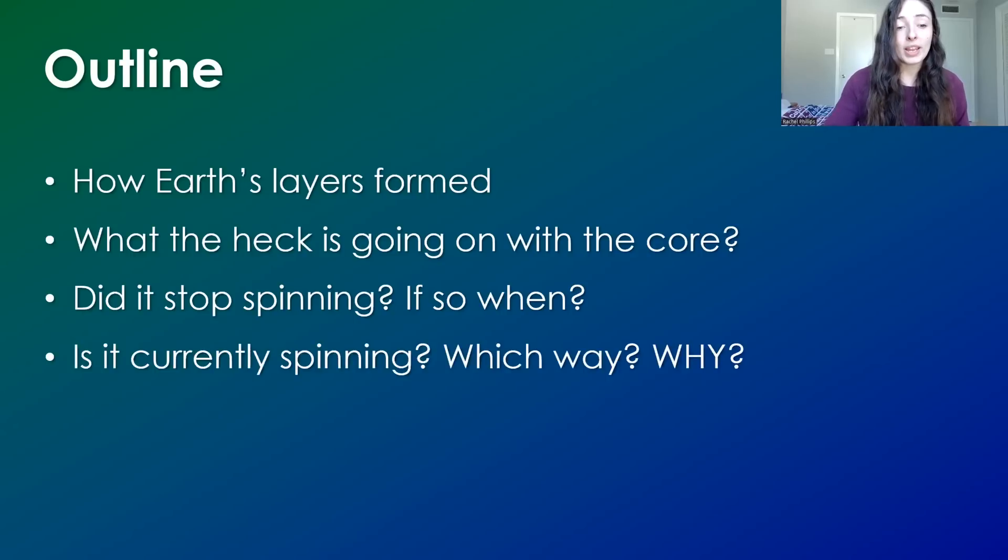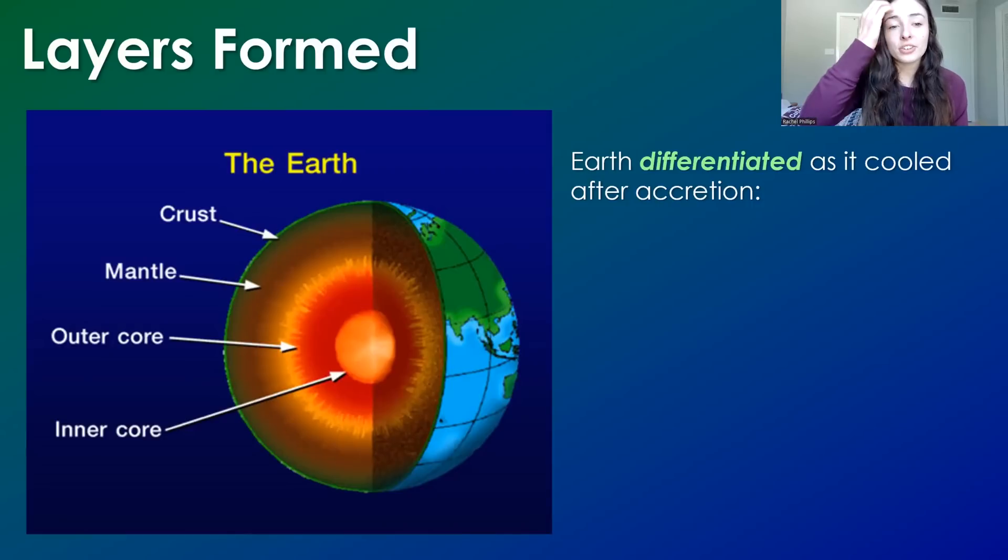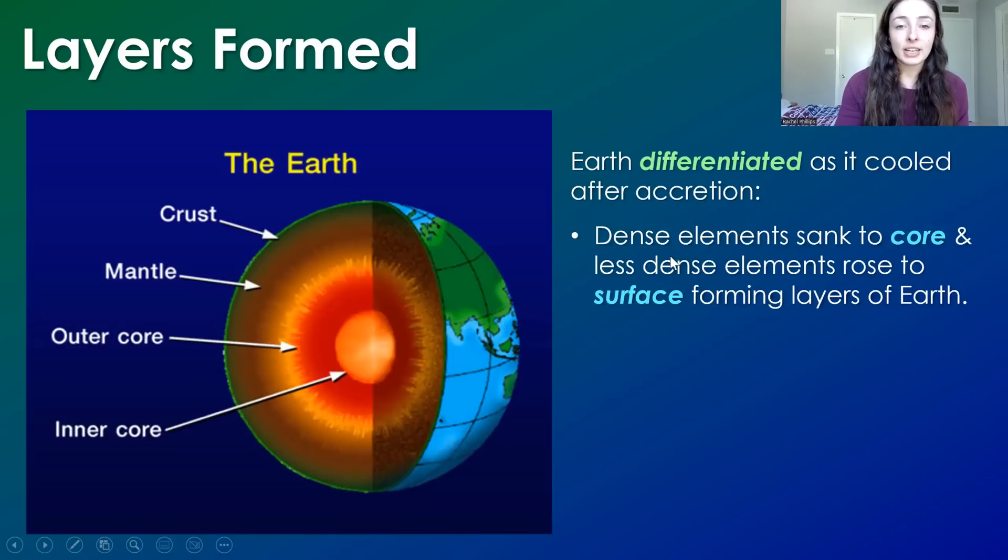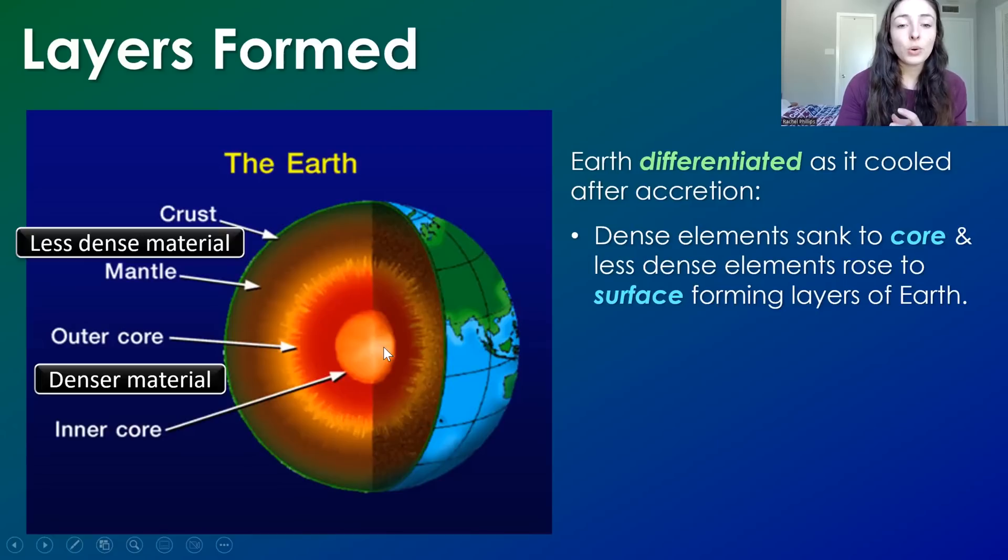Did it stop spinning? And if so, when is it currently spinning? Which way is it spinning and why? So the layers on Earth formed after accretion because as Earth cooled down, it underwent something called differentiation, in which dense elements sank to the core and less dense elements rose to the surface. That's why we have an iron-rich core and a silicate, less dense material-rich mantle and crust.